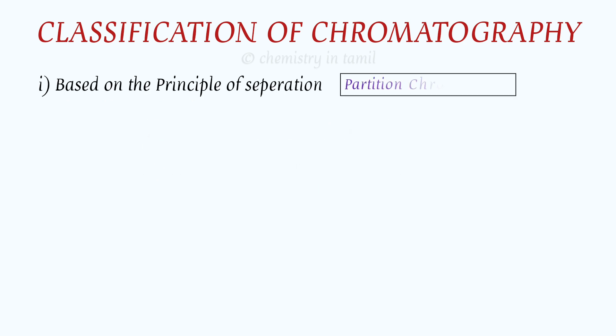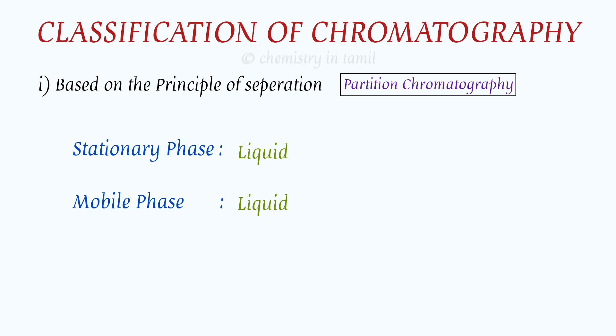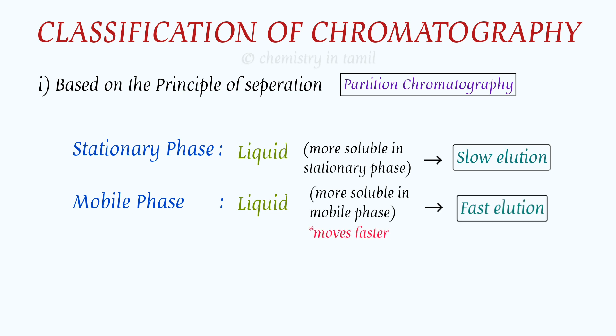In partition chromatography, the stationary phase is a liquid and the mobile phase is also a liquid, and the two liquids are immiscible. We apply a mixture of compounds — such as plant extract or drug mixture — to the system. If the mixture of compounds is more soluble in the stationary phase, it will move slower and be eluted later.